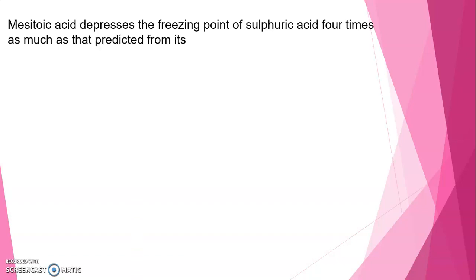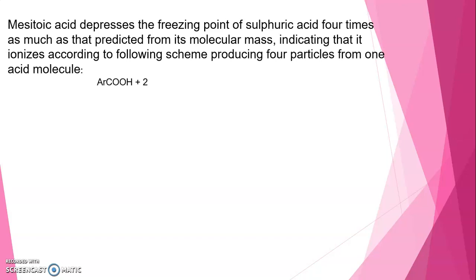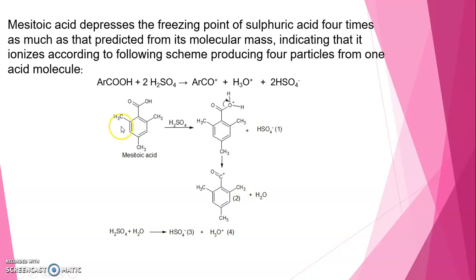Another evidence for acyclic acid comes from the fact that mesithoic acid depresses the freezing point of sulfuric acid four times as much as predicted from its molecular mass, indicating that it ionizes according to the following scheme producing four particles from one acid molecule. Here the ester is protonated here, and one hydrogen sulfate is produced, and this species splits into acylium carbocation and water. And water abstracts the proton from sulfuric acid and one more hydrogen sulfate is produced here along with the formation of hydronium ion. So totally there are four ions produced: two hydrogen sulfate ions, one hydronium ion, and one acylium carbocation.